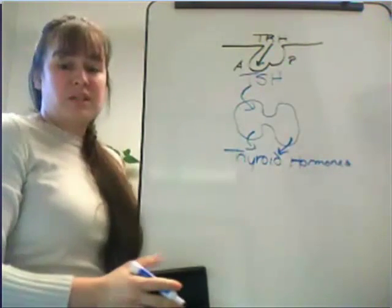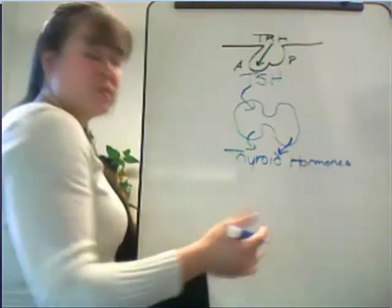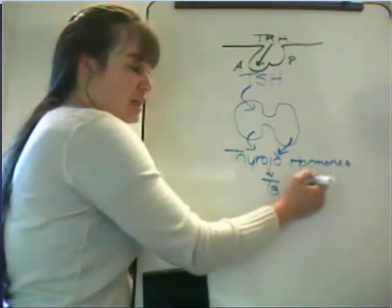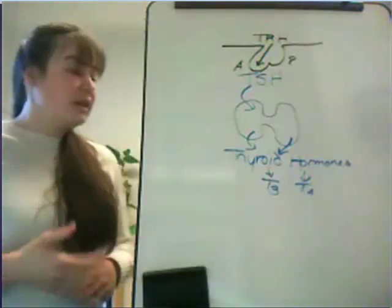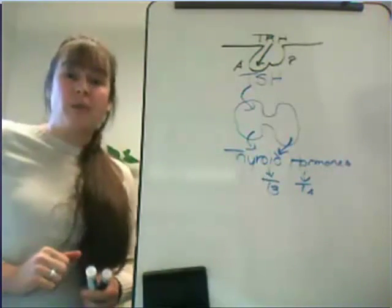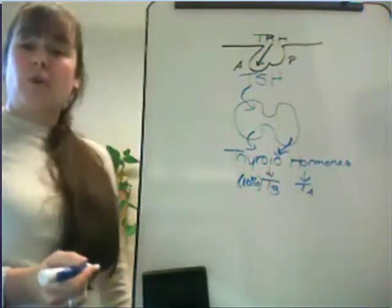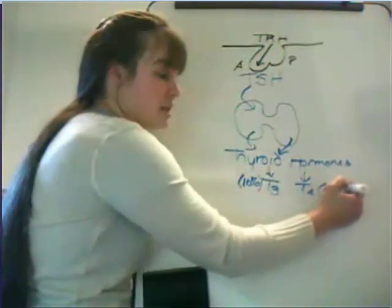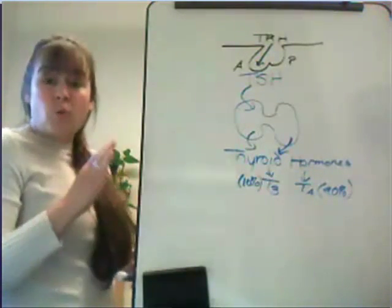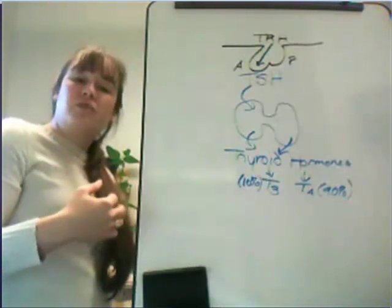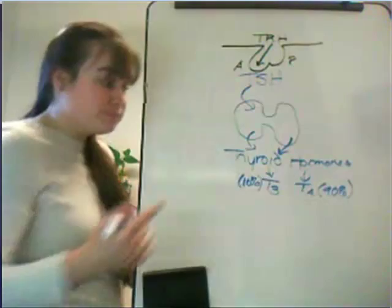Thyroid hormones is the broad category for the actual hormones produced — an active state and an inactive form that are released into circulation. The active state is T3, and the inactive is T4. T3 stands for triiodothyronine, and T4 stands for tetraiodothyronine, also commonly referred to as thyroxine. About 10% of the secreted thyroid hormones is the active T3, and the remaining 90% is T4, which is bound to proteins in circulation. This helps maintain relatively consistent circulating levels of thyroid hormones.